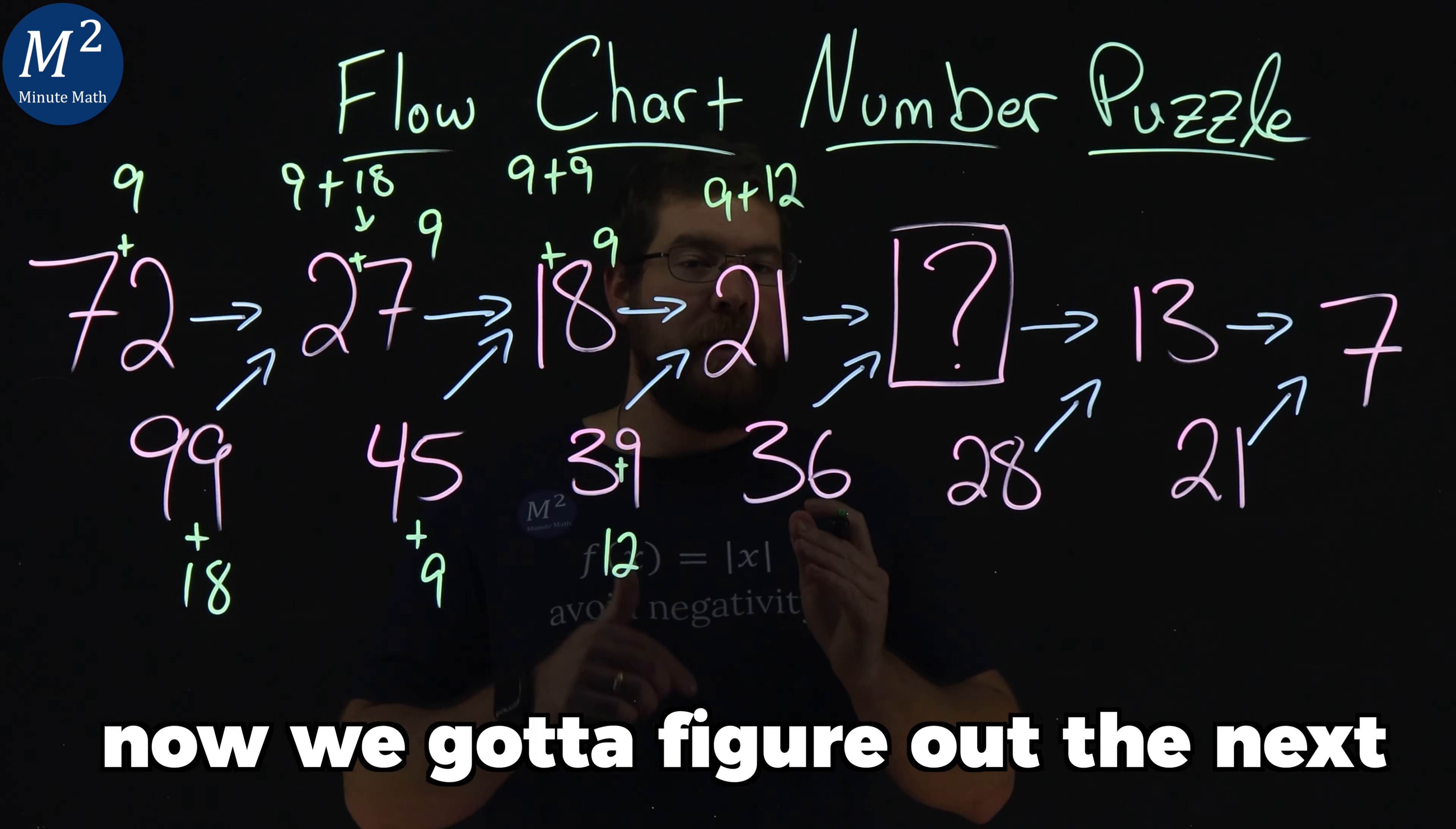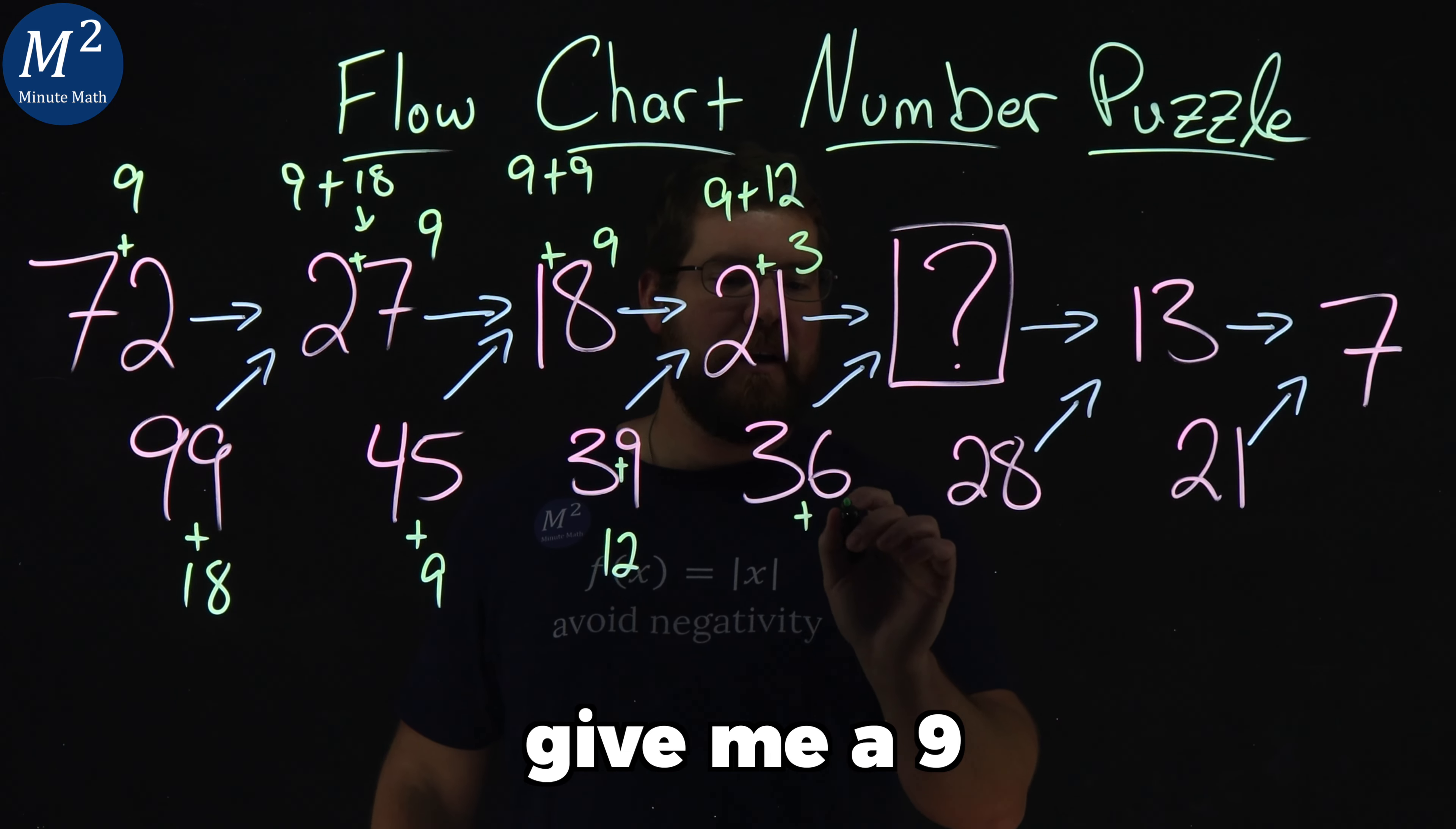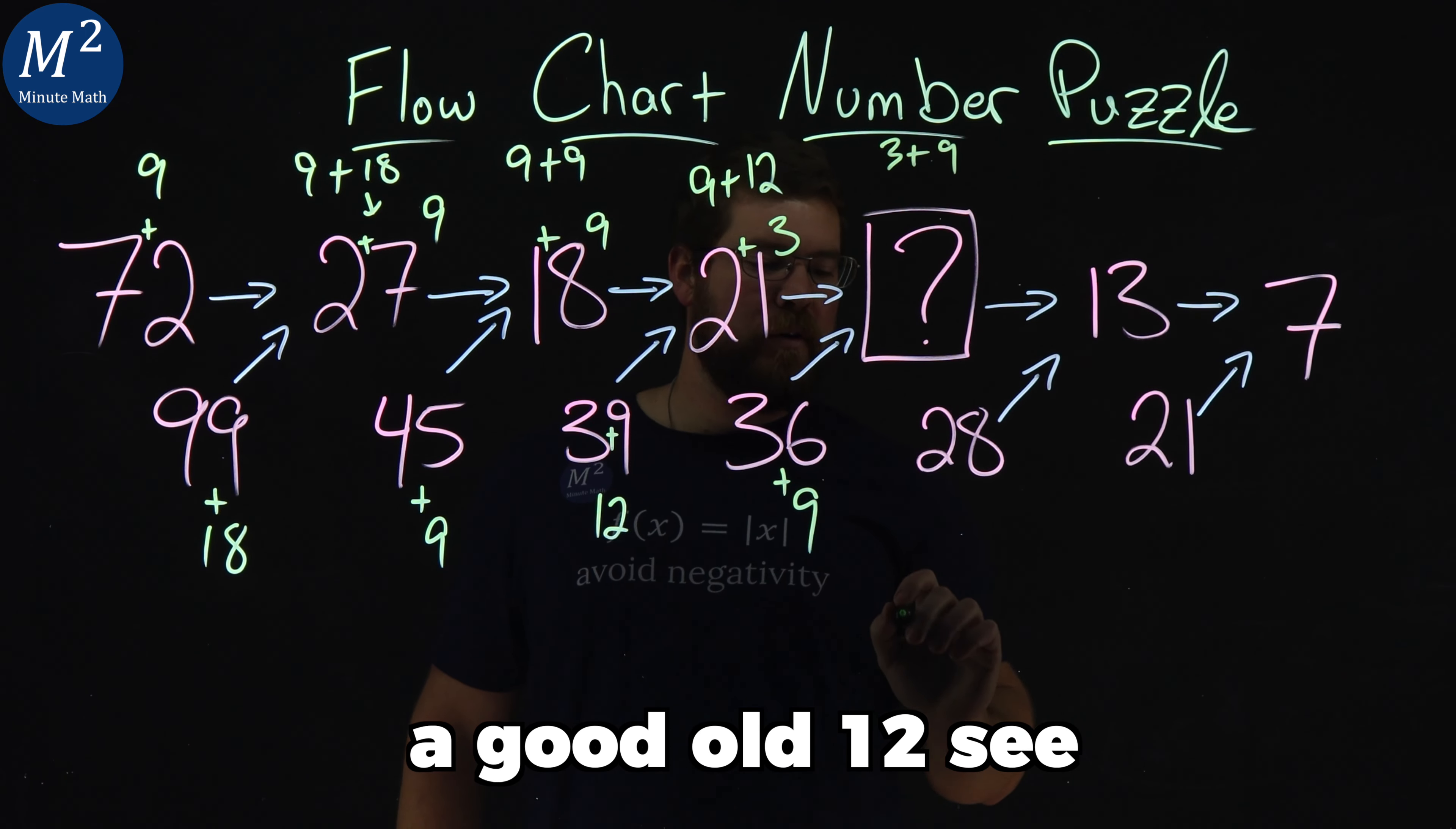Alright, so now we got to figure out the next number and see if that pattern holds true. 2 plus 1 is a 3, 3 and 6 give me a 9, 3 plus 9 gives me a good old 12.